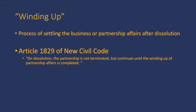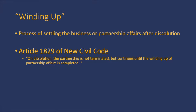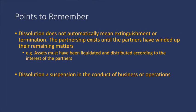If dissolution is the cessation of the partnership, winding up is the process of settling the business or partnership affairs after dissolution. Article 1829 states: on dissolution, the partnership is not terminated, but continues until the winding up of partnership affairs is completed. It shall be noted that the dissolution of a partnership does not automatically lead to extinguishment or termination — it continues until the partners have wound up its remaining matters.